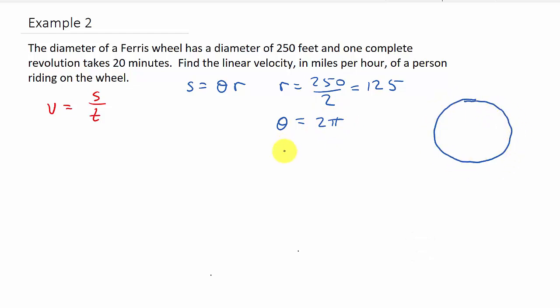Alright, so now we can go ahead and get S, which is, that would be 125 times 2 pi, which that would be 250 pi. So there's S. So now let's just go ahead and plug this into our formula. So S is 250 pi, over T.